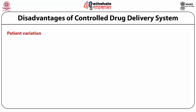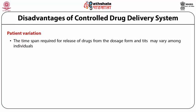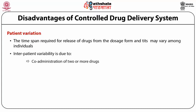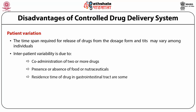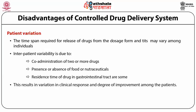Oral bioavailability is also associated with the hepatic extraction ratio. Greater the hepatic extraction ratio, higher will be the hepatic first-pass effect and lower will be the oral bioavailability. The possibility of less drug availability due to first-pass metabolism is therefore greater with a controlled drug delivery system than with a conventional delivery system. Patient variation is another factor — the time span required for drug release and absorption may vary among individuals due to physiological conditions, co-administration of two or more drugs, presence or absence of food or nutraceuticals, and gastrointestinal residence time, leading to variability in clinical response and degree of improvement among patients.